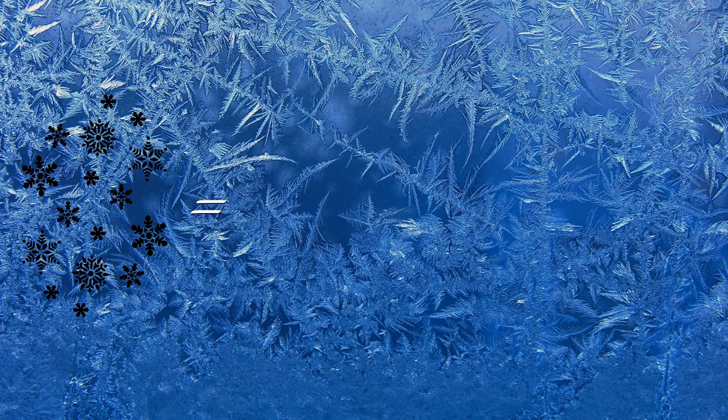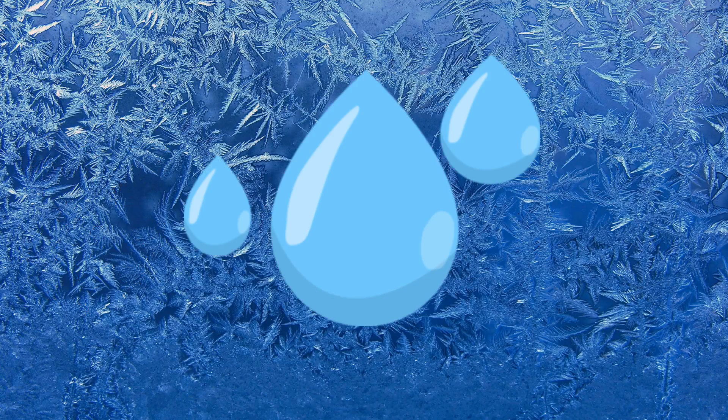First of all, we need to know that snow is water. Snow is formed when temperatures are lower than zero degrees Celsius and when the air is moist. When the moisture freezes in the air, the water turns into tiny ice crystals.